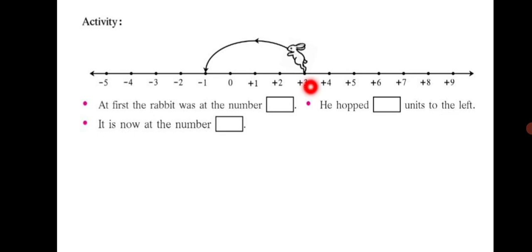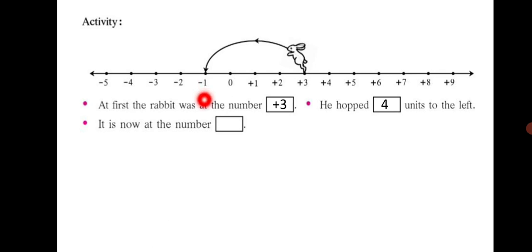Next activity: at first the rabbit was at the number plus three. Count how many units it hopped to the left — from three, two, plus two, one, two, three, four — four units backwards. So the rabbit hopped four units to the left, and it is now at the number minus one. So plus three plus minus four gives us minus one.